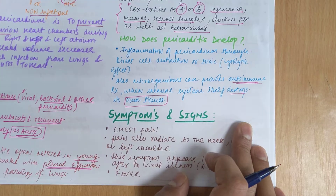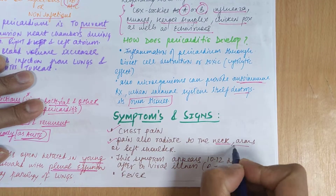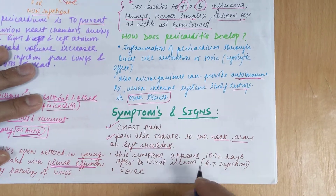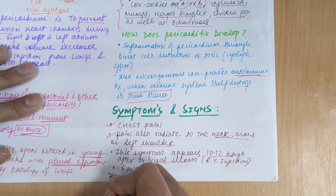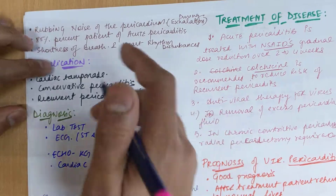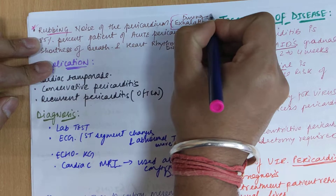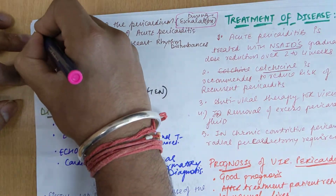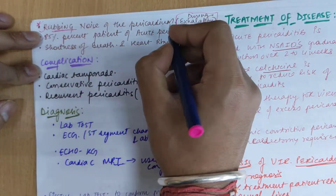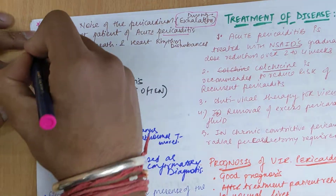Symptoms include chest pain, which can radiate to the neck, arm, and left shoulder region. Symptoms appear 10 to 12 days after the viral infection. Fever is also a common sign. A pericardial friction rub — a rubbing noise — is heard on exhalation and is seen in 85% of acute pericarditis patients. Shortness of breath and heart rhythm disorders can also occur.